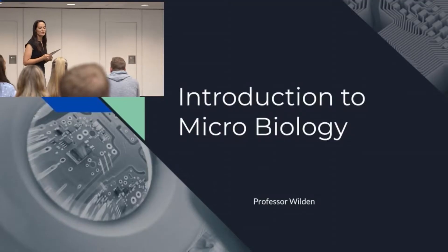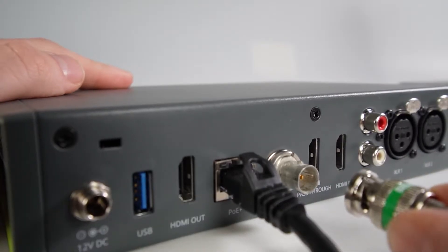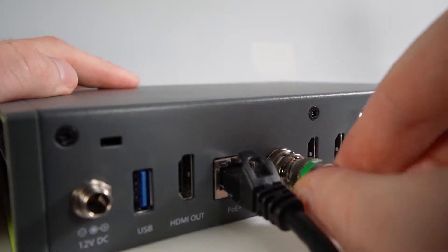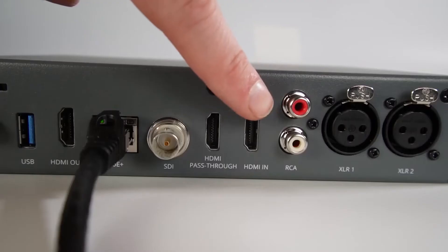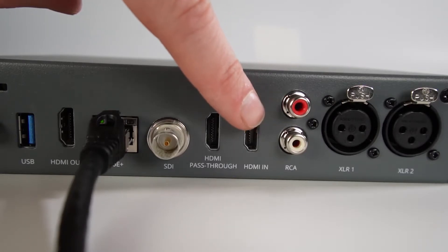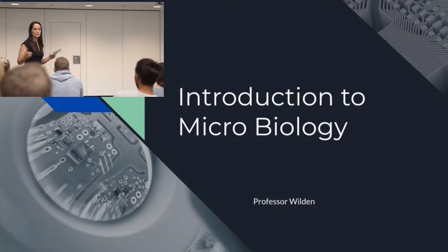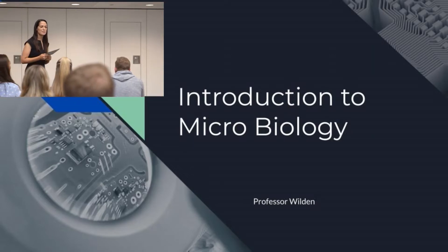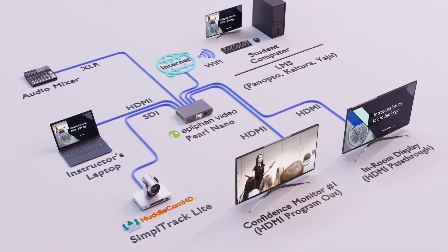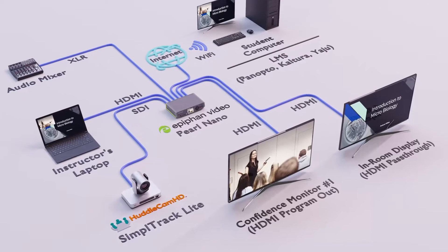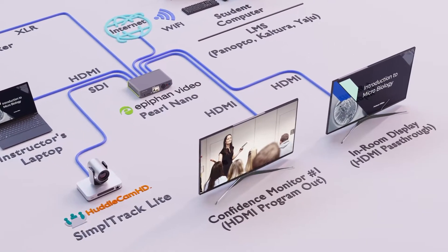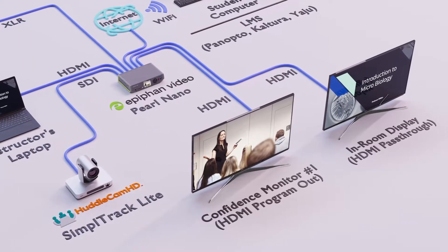For this example, the SimpleTrack Lite has been connected to Pearl Nano's SDI input, and the instructor's laptop has been connected to the HDMI input. Pearl Nano is then able to create a picture-in-picture layout for lectures being captured and sent to the learning management system. Pearl Nano is also able to output an HDMI video feed to power a local confidence monitor for the instructor to view during presentations.